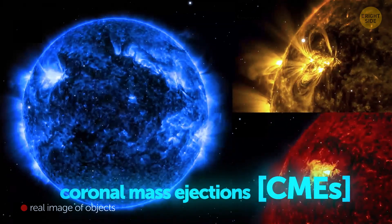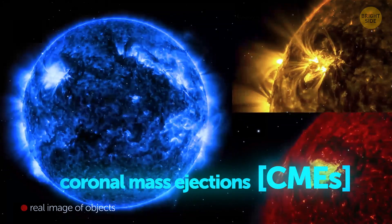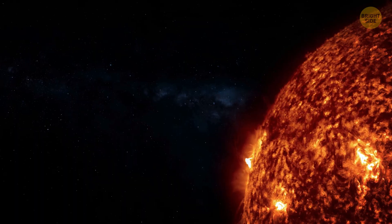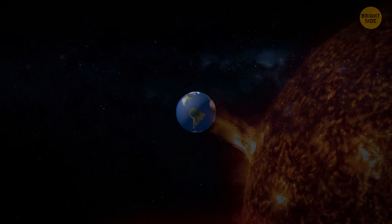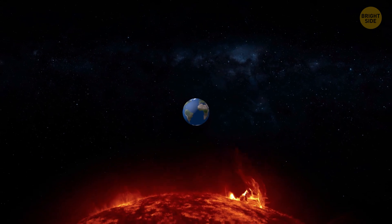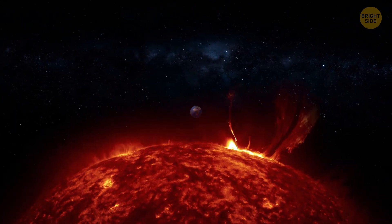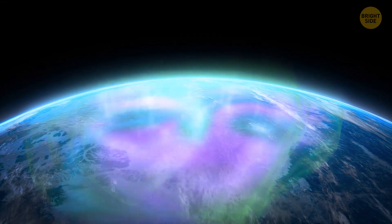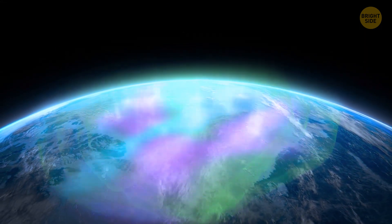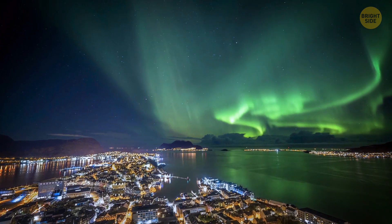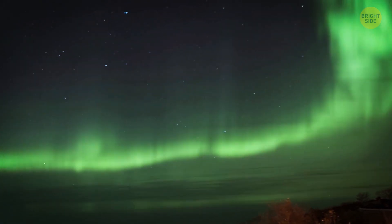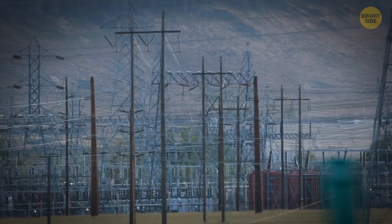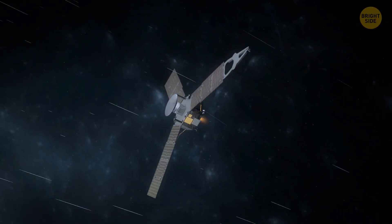As for coronal mass ejections or CMEs, which are launched by solar flares, they're sent outward into space. They hit planets, satellites, and basically any objects in their path. Those that come across Earth trigger geomagnetic storms, which in most cases result not only in beautiful auroras, but also in power grid failures and satellite malfunctions.